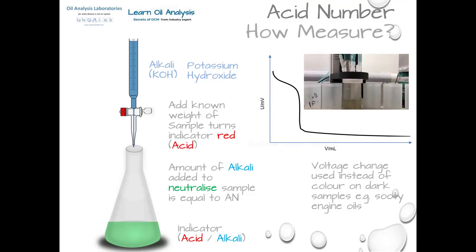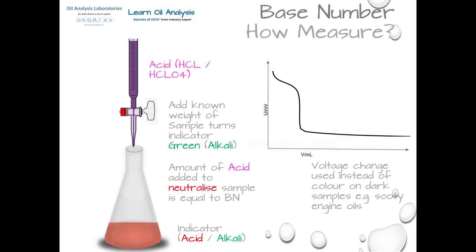On dark oils we cannot use colour, so we use voltage change — called potentiometric titration. To measure the base number, we simply switch the solution and titrate with acid, but still use the units of milligrams of KOH per gram to allow for direct comparison of measurements.